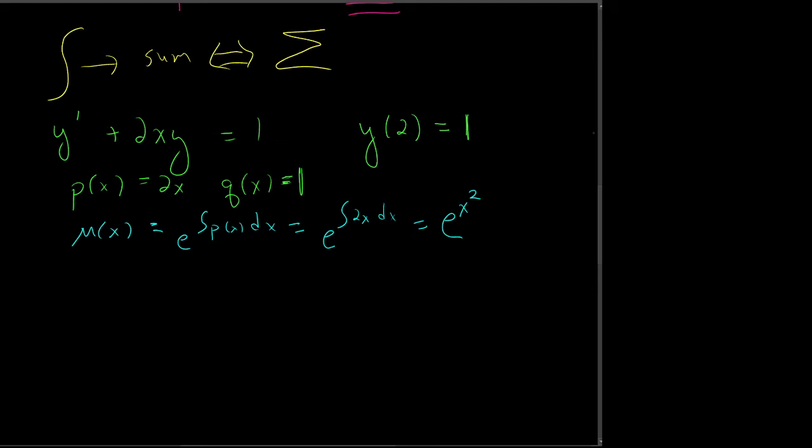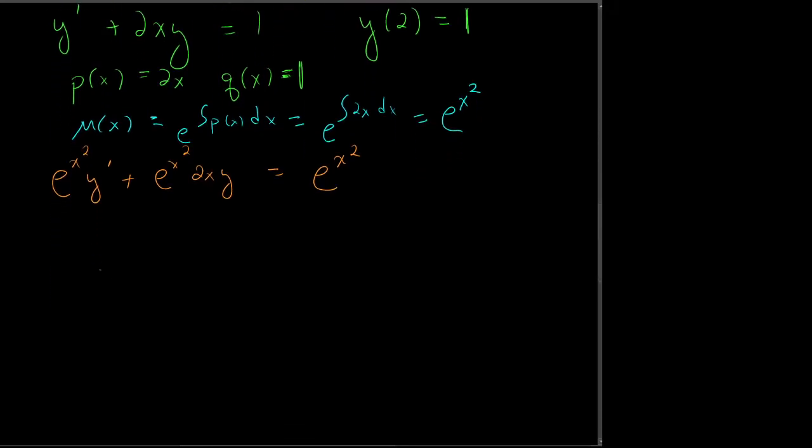I'm going to multiply this back through the original equation. So the original equation is going to change in form, and it's going to look like e to the x squared y prime plus the 2xy term equals e to the x squared. I have now transformed this noting that this is the derivative of e to the x squared y. The whole purpose of this technique is to notice that this is differentiating by parts.